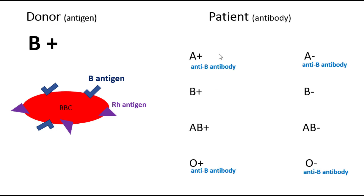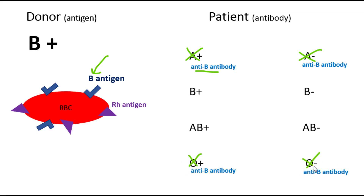Which patients do not accept B antigen? The ones that have anti-B antibody. I know that those are blood type A and also blood type O. So I eliminate them — they do not accept B antigen.